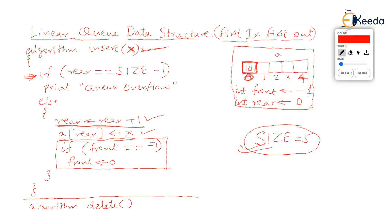The insertion algorithm summarizes to two lines: rear = rear + 1, and a[rear] = x. But there is an additional check: we ask if front is currently minus 1. Since front was initialized to minus 1, this if is true, and front is forcibly made 0.